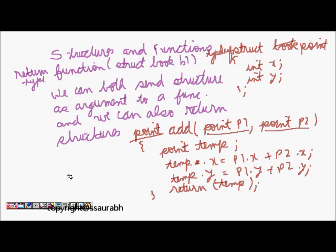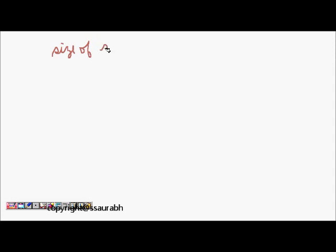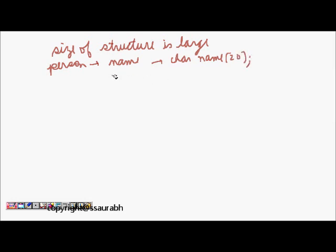But one problem with structures is that the size of structure is generally very large. For example, if I take a record like a person - a person will have char name[20], then his address as char address[60], int age, and the social security number as int.